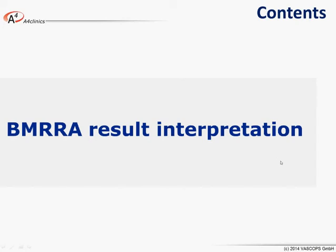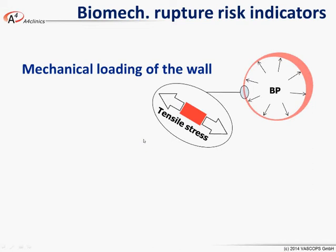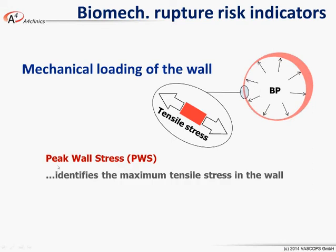Here and now let's come to the data interpretations, or to the result interpretations. What's the result of the biomechanical rupture resistance? We recall that blood pressure is translated into tensile stress into our wall, and now we're going to take the highest tensile stress all over the aneurysm wall — that's what we call peak wall stress — and this is thought to be a good indicator of how close or how risky an aneurysm is to rupture.